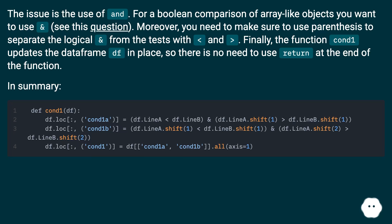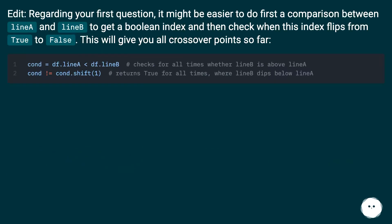In summary, regarding your first question, it might be easier to first do a comparison between linear and lenapp to get a boolean index, and then check when this index flips from true to false. This will give you all crossover points so far.